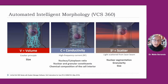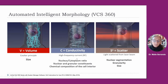In this slide, we can see how the automated intelligent morphology module works. With this module, we can obtain differential leukocyte information using three measurements that measure individual cell volume, high-frequency conductivity, and laser light scatter. The combination of low-frequency current, high-frequency current, and light scattering technology provides the system with abundant cell-by-cell information, translated into data plots. Here we can see the relation between volume and cell size via the Coulter principle, conductivity related to nucleus and cytoplasm ratio, nuclear and granular constituents, chemical composition of the cell interior, and laser scatter information related to nuclear segmentation, granularity, and cell size.